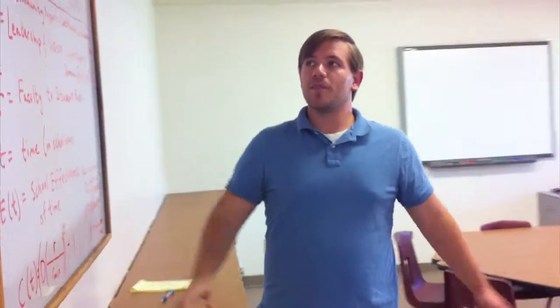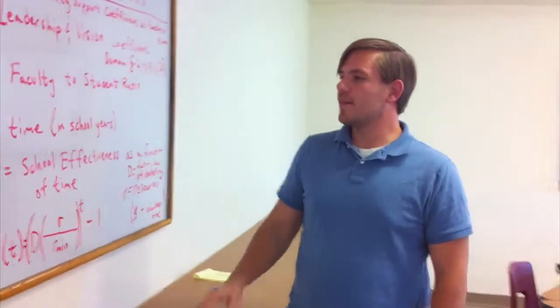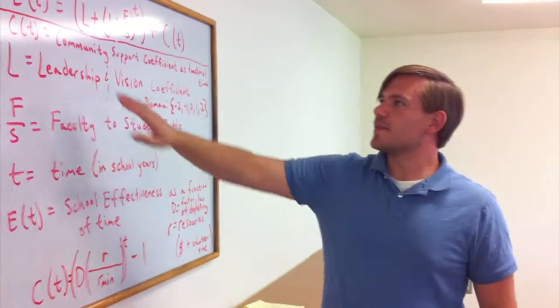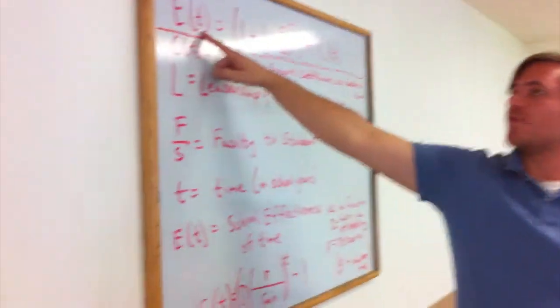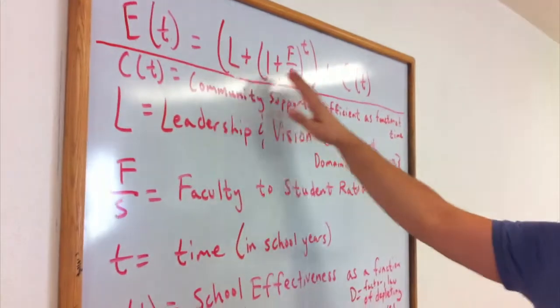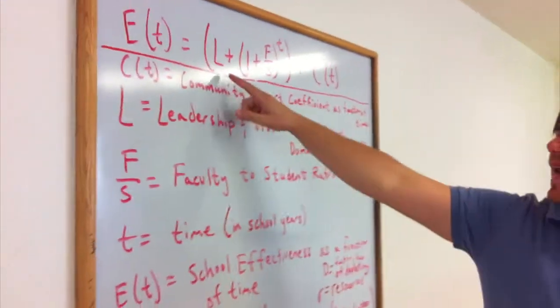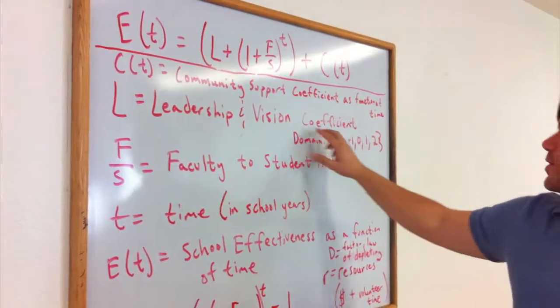This is a formula that I came up with for the effectiveness of a school. This is school effectiveness as a function of time. Here we have the general component, and this L is the leadership and vision coefficient.